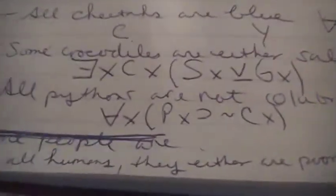Now, do you think there could be a crocodile that's a salty and a gharial? Obviously not. Assigning s and g — this is how you might translate the statement 'some crocodiles are either salties or gharials': for some x, if it's a C, it's either S or G but not both. Here's another example: 'all pythons are not colubrids.' Colubrids are a different kind of snake and pythons are boids, so this is a logically true statement. Since we have the keyword 'all' we use the universal quantifier. In any case, if it's a python, it is not a colubrid — that's how you would translate that.